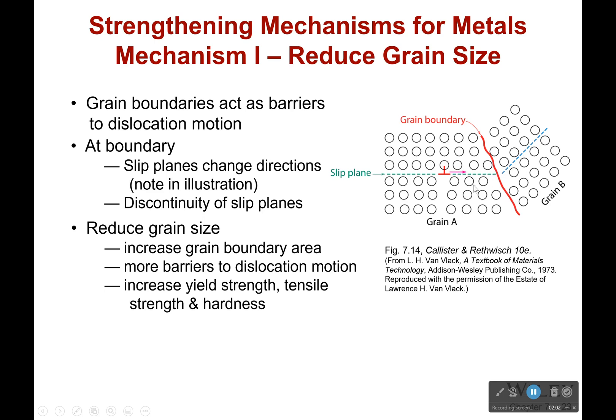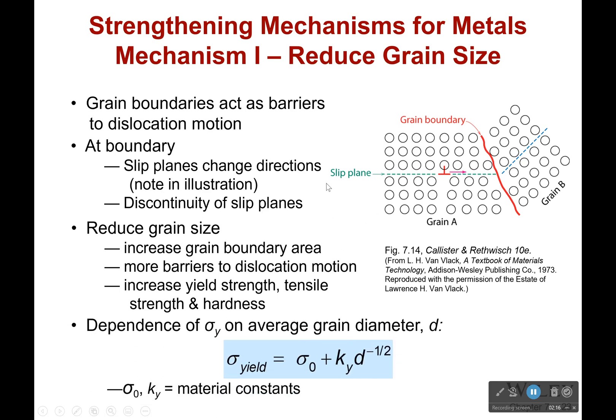If we reduce the grain size, we increase the number of grain boundaries that a dislocation has to cross — there are more barriers to dislocation motion. This will increase our yield strength, tensile strength, and hardness. The yield stress is based on the average grain diameter: as that diameter increases, yield stress decreases, and as the diameter decreases, yield stress increases.